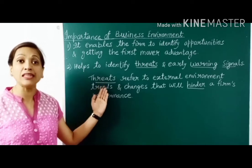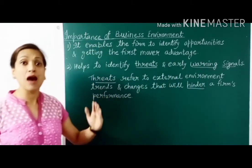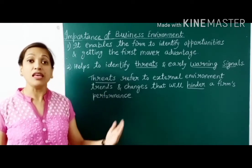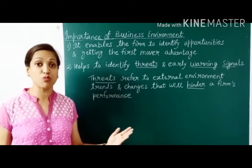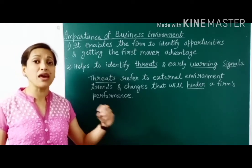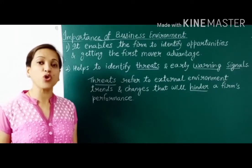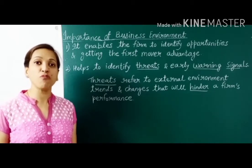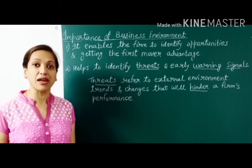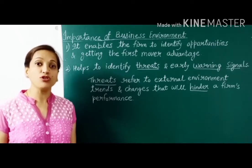Ise humein warning signal, chetavni ke roop mein lena chahiye ki yadi humein market mein survive karna hai toh humein bhi competitor ke jaisa similar product banana hoga ya usse bhi zyada acche product ki service provide karni hogi ya advertisement badhani hogi, apni cost kam karni hogi. For example, online shopping is a threat for traditional shops. A new version of mobile is always a threat for the old one. Japanese auto manufacturers became a threat for the American car market in the late 1970s. Nokia company did not improve its mobile phone, so with the entry of new companies it does not exist in the market now.